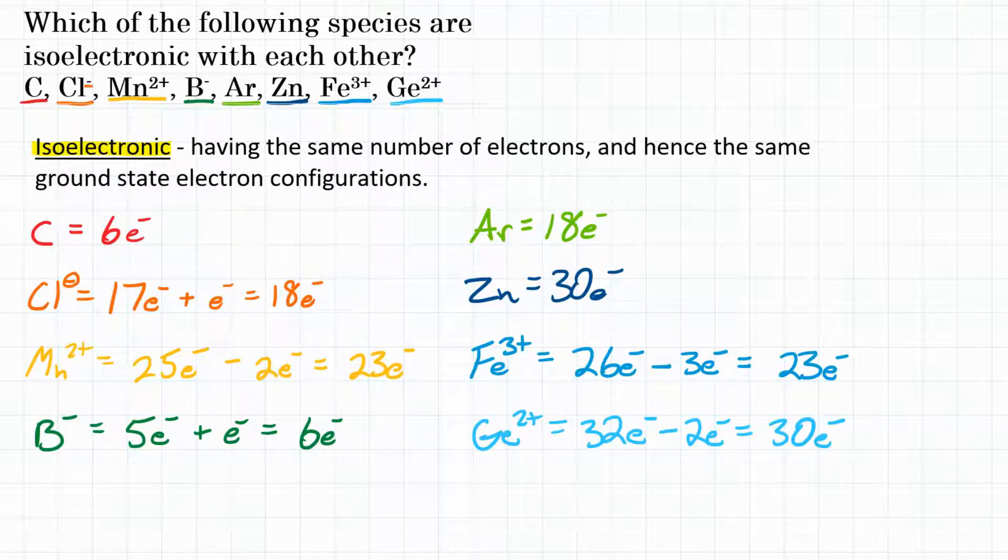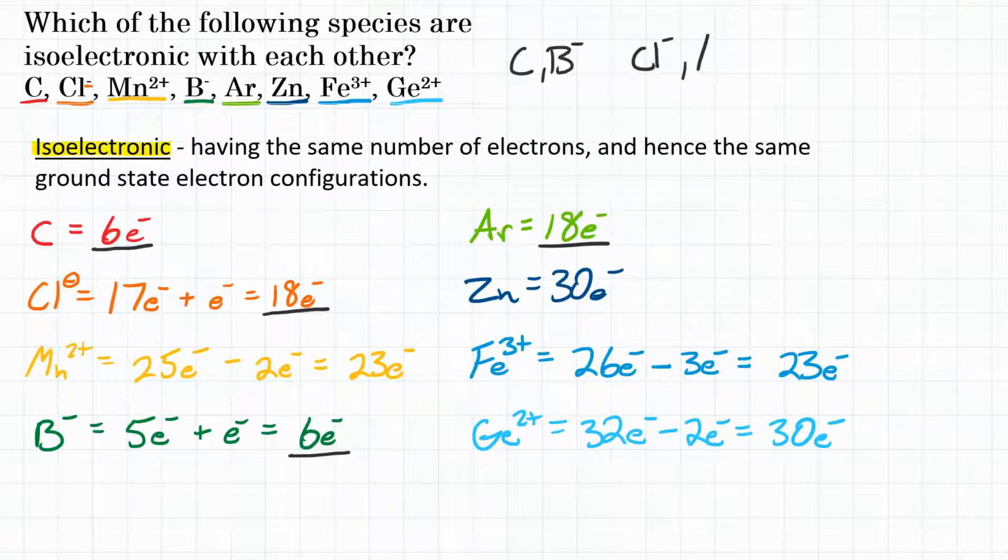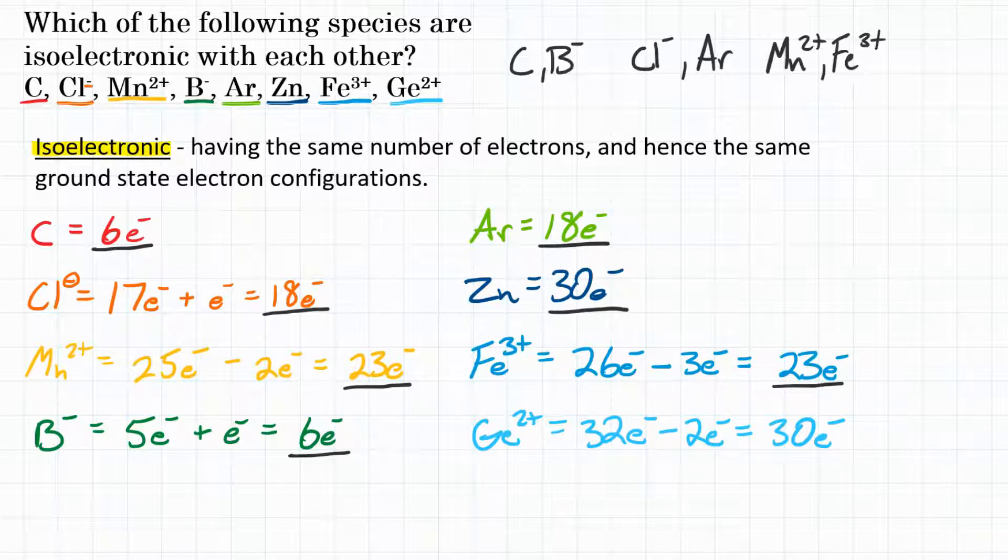Alright, so again, the question is asking which of the following species are isoelectronic with each other? Isoelectronic means having the same number of electrons. Looking at the work we did below, we can see that carbon has 6 electrons, and so does boron negative 1. So carbon and boron negative 1 will be isoelectronic with each other. Chlorine negative 1 has 18 electrons, and so does an atom of argon. Manganese 2 positive has 23 electrons, and so does iron 3 positive. And then lastly, zinc has 30 electrons, and so does a 2 plus ion of germanium. So zinc and germanium 2 positive are isoelectronic with each other. Final answer for which of the following species are isoelectronic: we have these four groups right here.